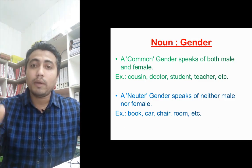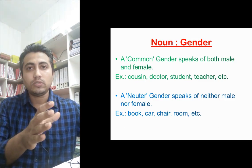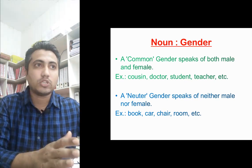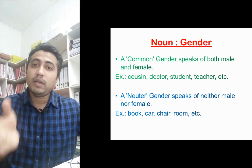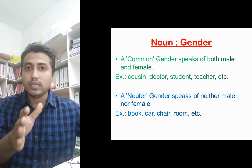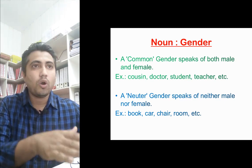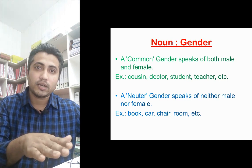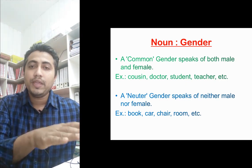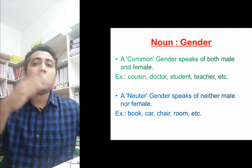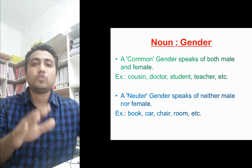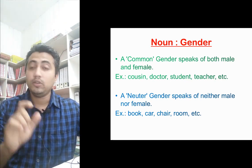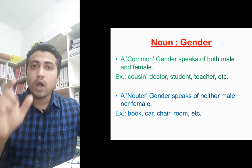The next one is common gender. Common gender means nouns that can belong to male as well as female. For example, doctor can be a male or a female, cousin can be a male or female, student can be a male or female, teacher can be a male or female. Nouns that can be either male or female are called common gender.